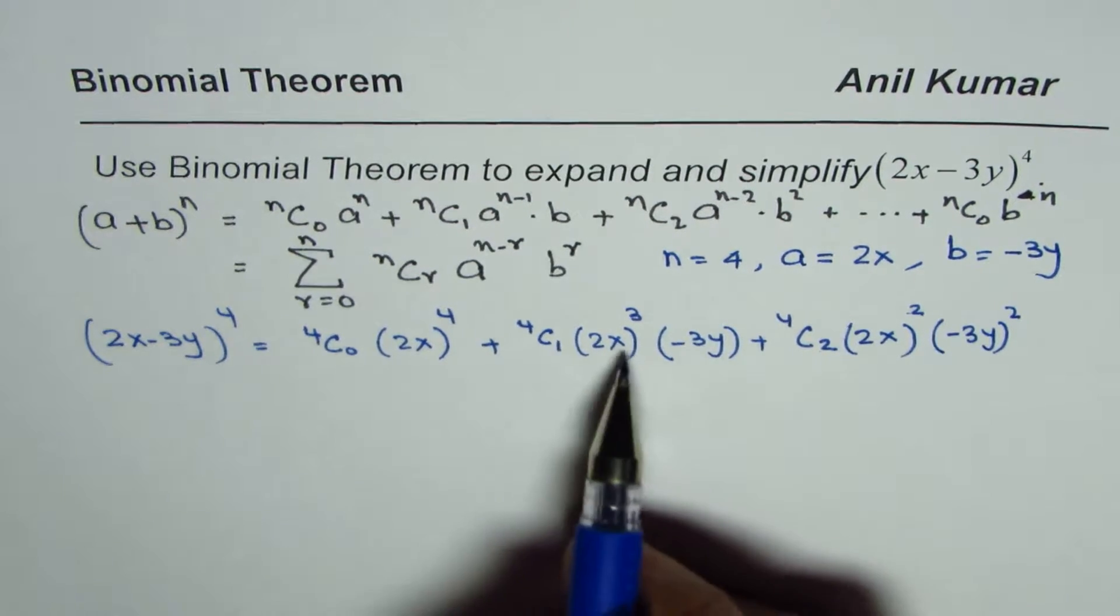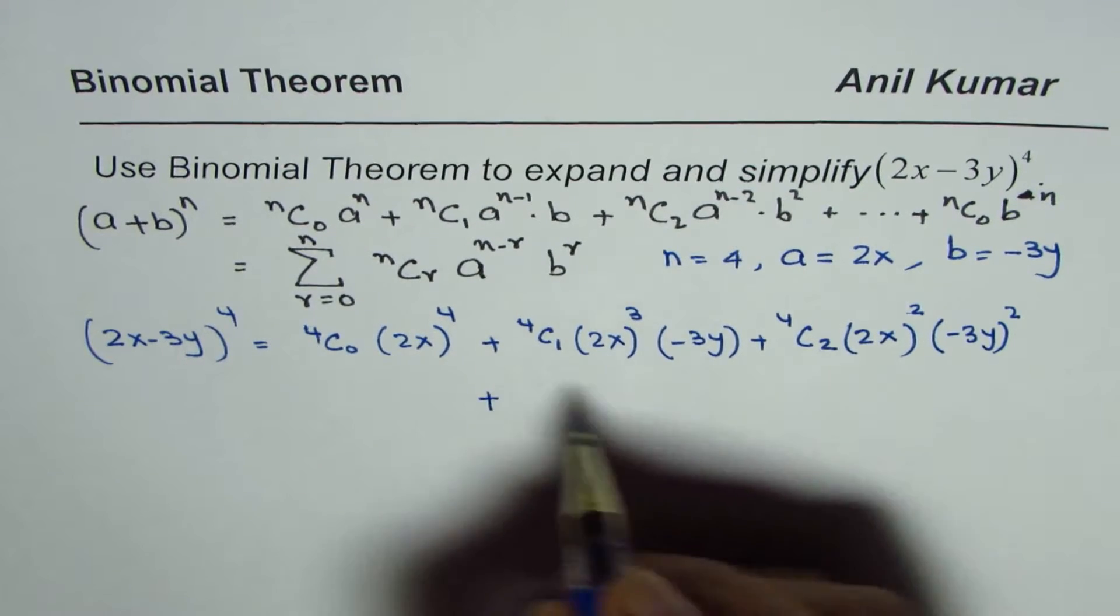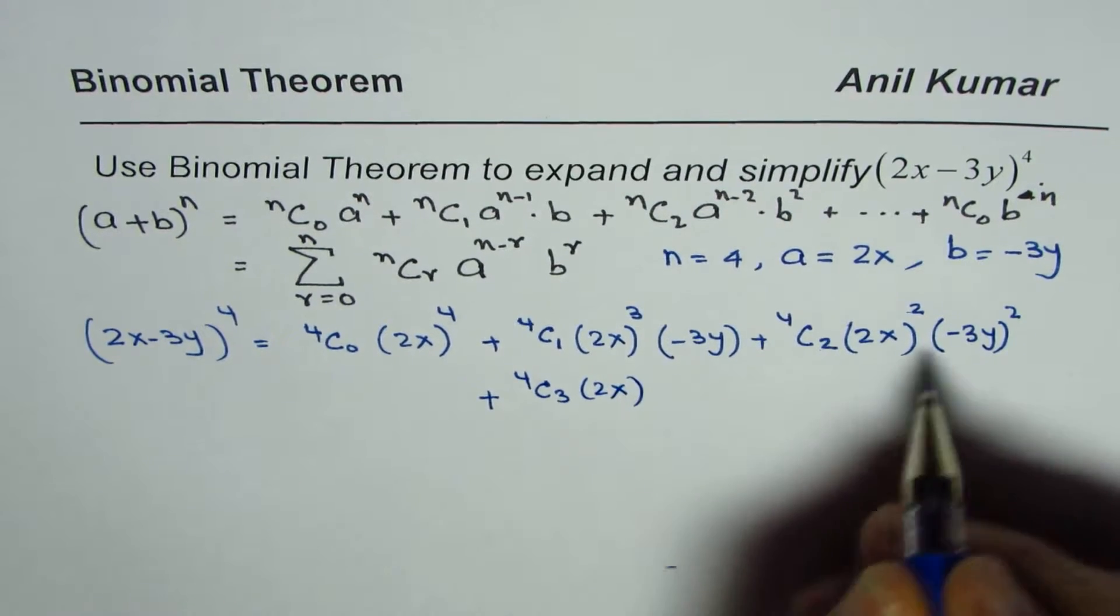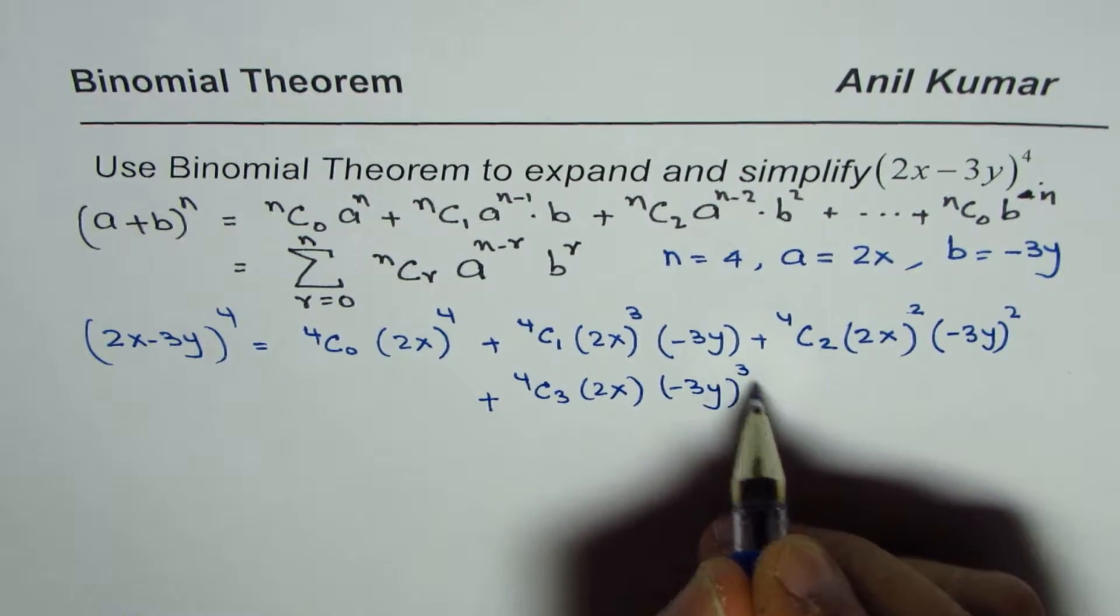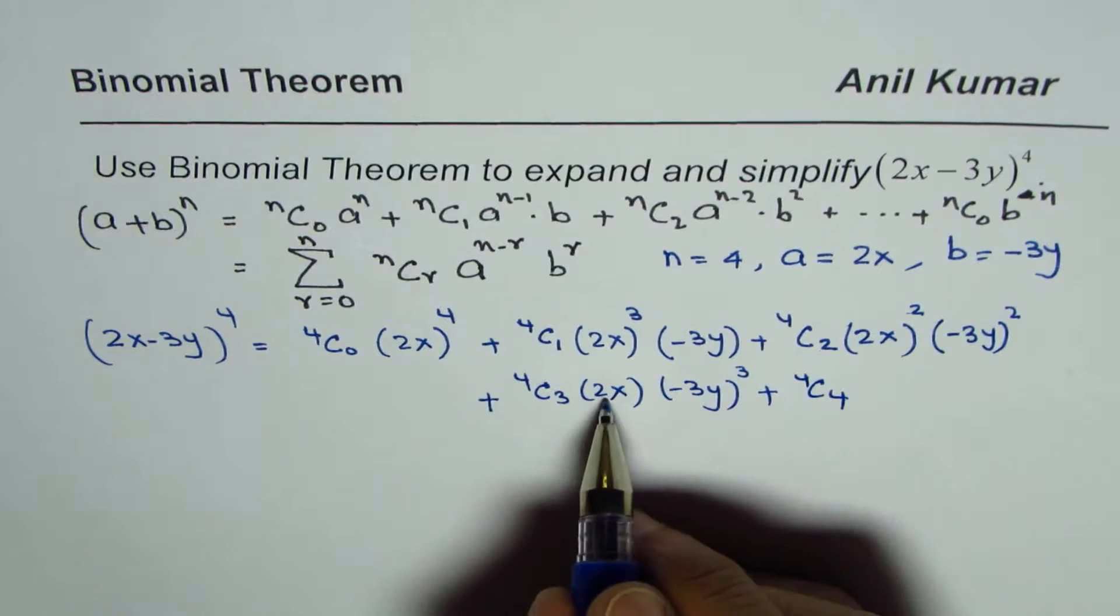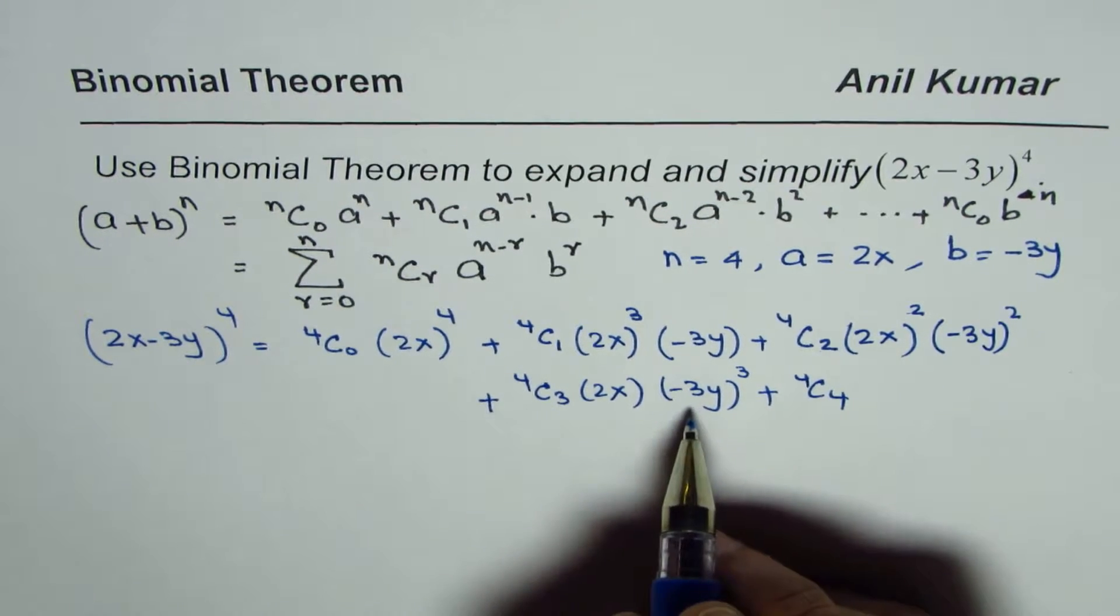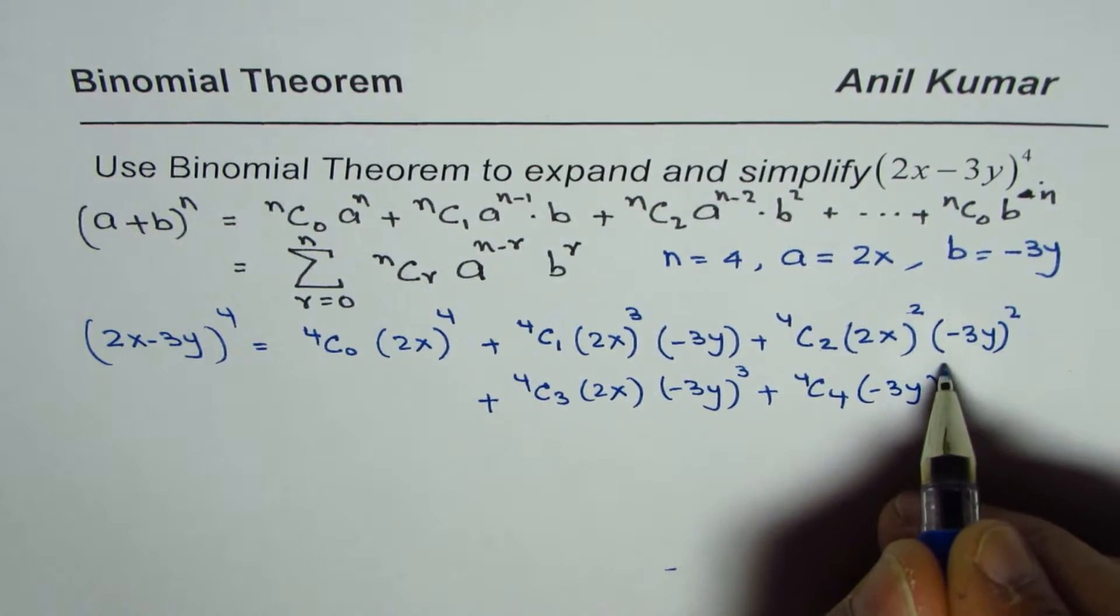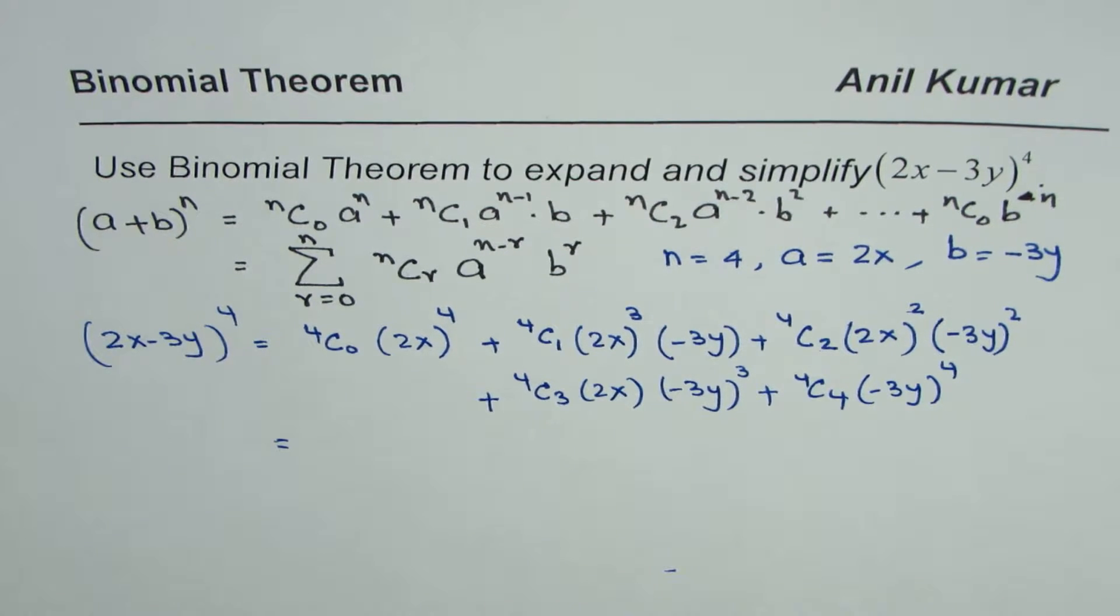Now we have 1, 2, 3 terms. We need 2 more. So I will write here 4C3 2x to the 1 and minus 3y to the cube plus 4C4. Now anything to the power of 0 is 1, so that term does not exist here. It is 1 and we have minus 3y to the power of 4. That is how we could expand using this formula.